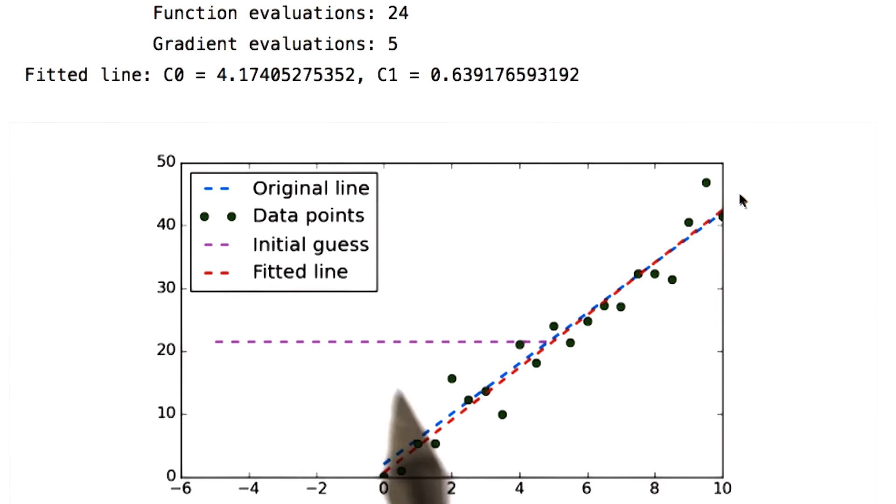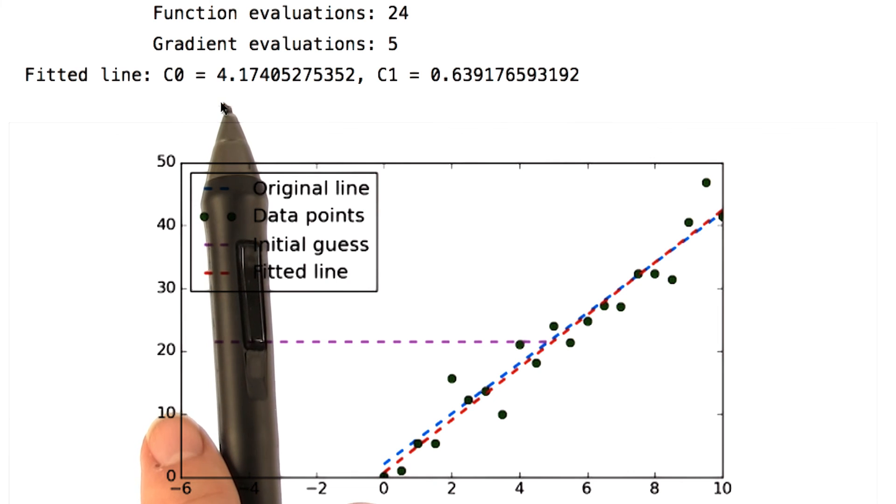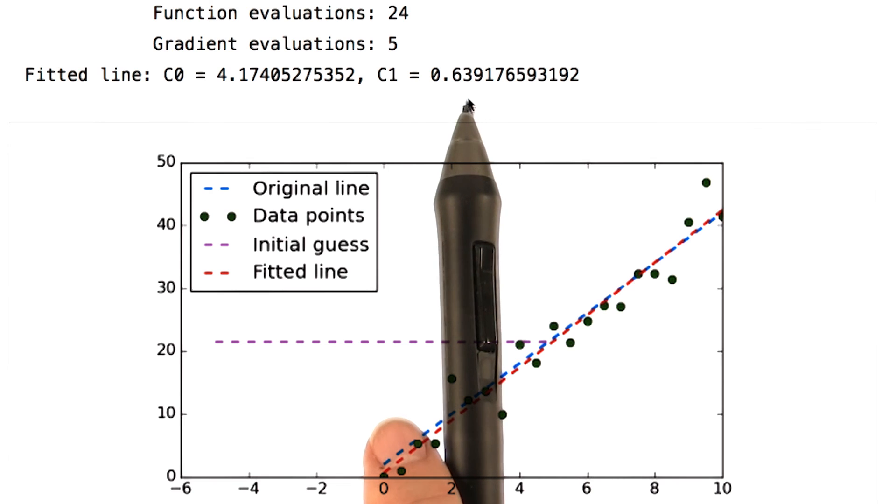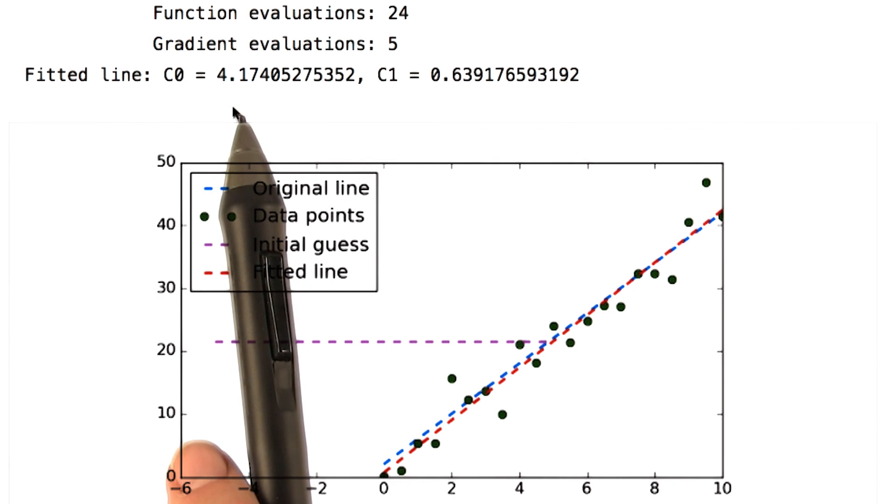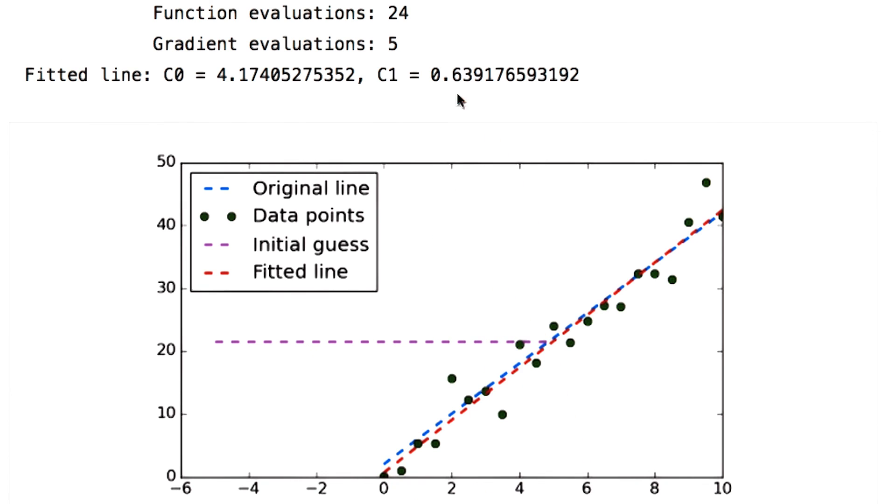We can check it here. So if you look in the code, you'll see that our real line had a slope of 4 and a y-intercept of 0.5. So it got 4.17 and 0.64. Not exactly, but if you look at the data, you can see that it's pretty hard to know exactly what the underlying line would look like. So I think our equation solver did a pretty good job.